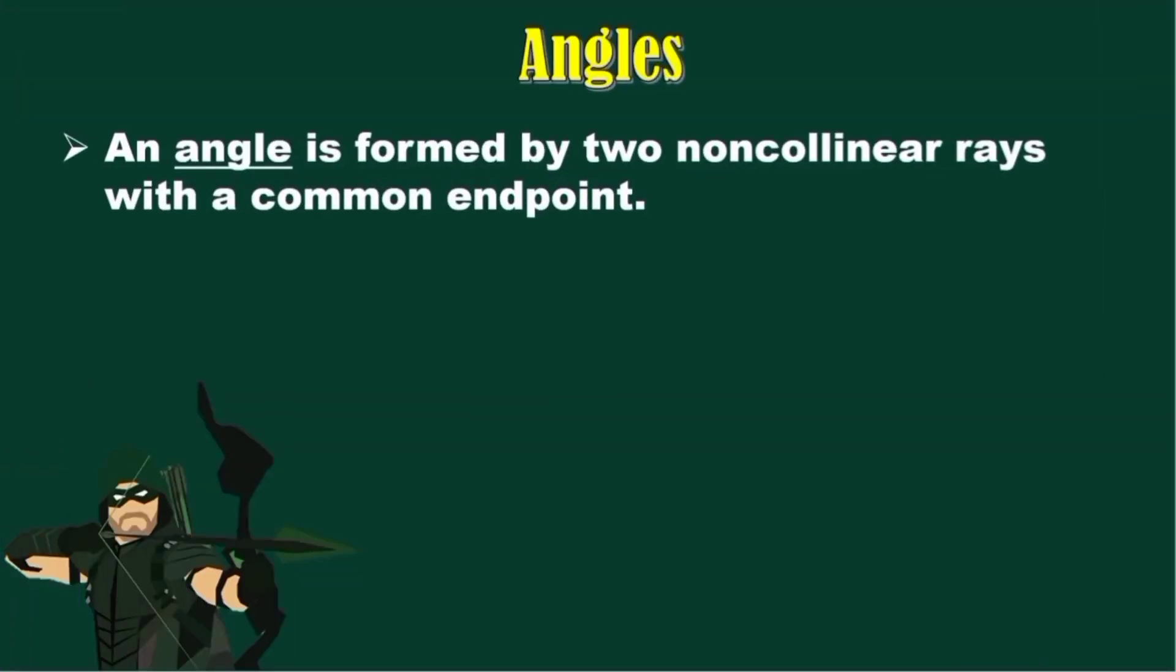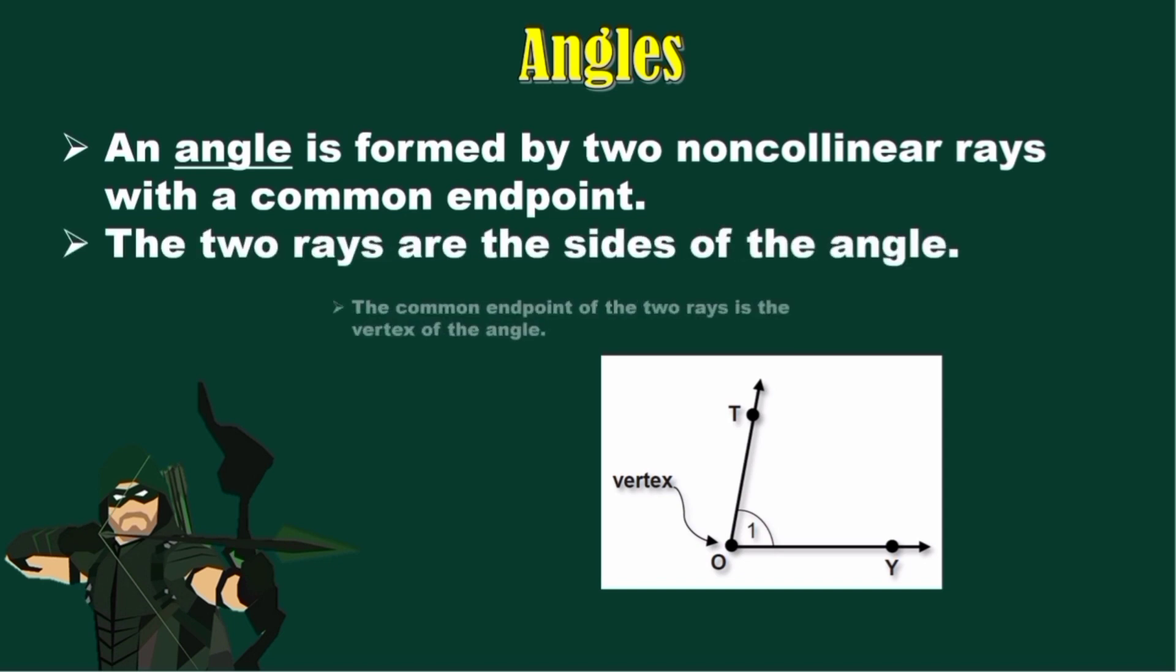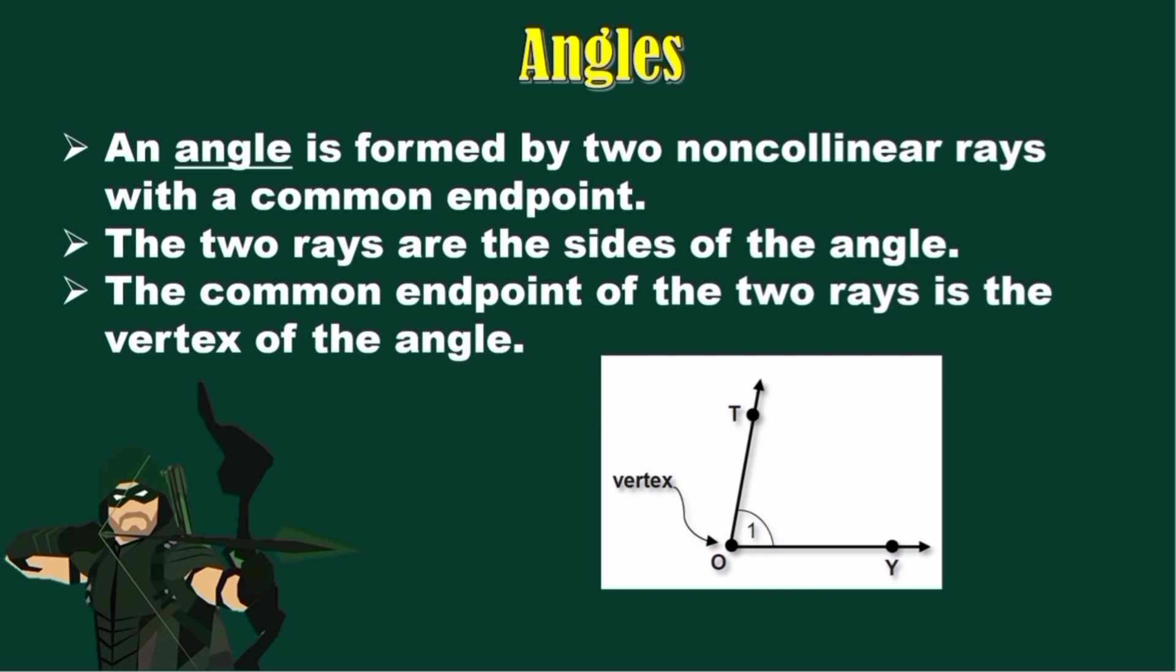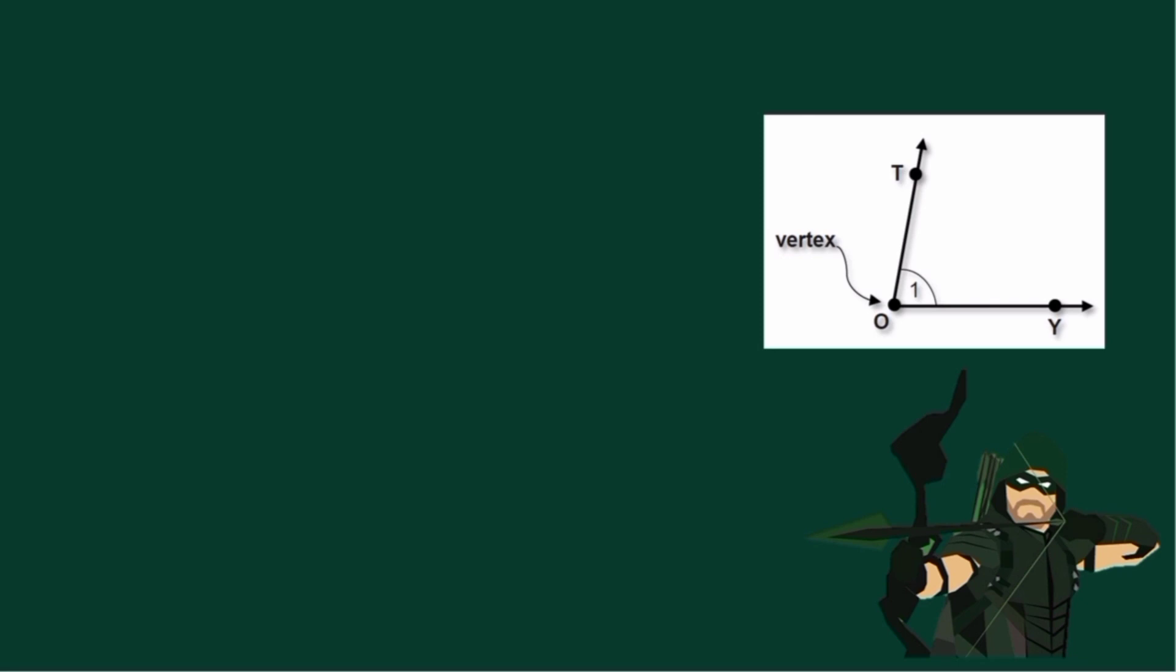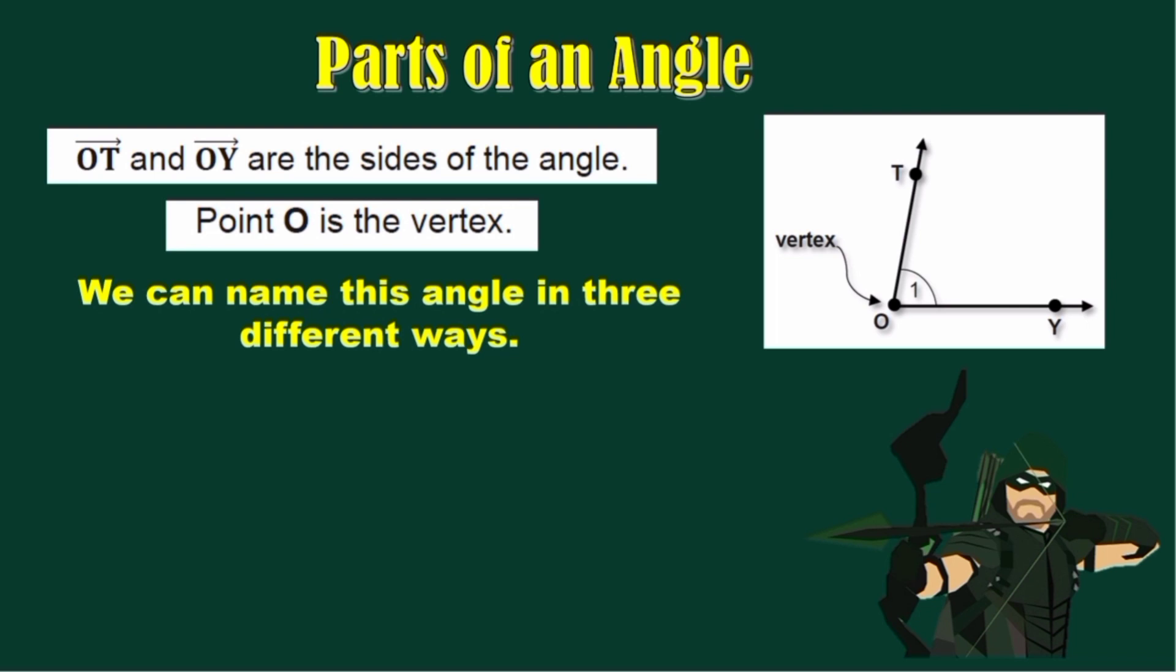An angle is formed by two non-collinear rays with a common endpoint. I have here an illustration of an angle. The two rays are the sides of the angle. The common endpoint of the two rays is the vertex of the angle. Let's use again the figure to identify the parts of an angle. Ray OT and ray OY are the sides of the angle. Point O is the vertex. We can name this angle in three different ways.